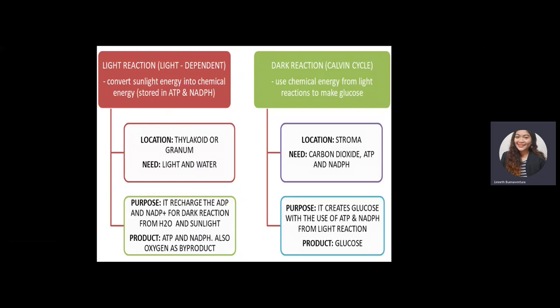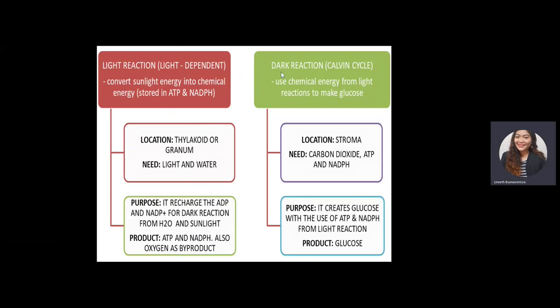The light reaction will not happen without sunlight, because sunlight is the key ingredient for the light reaction to occur. However, the process in plants to make food itself does not need sunlight — that is where the dark reaction, or Calvin cycle, occurs.